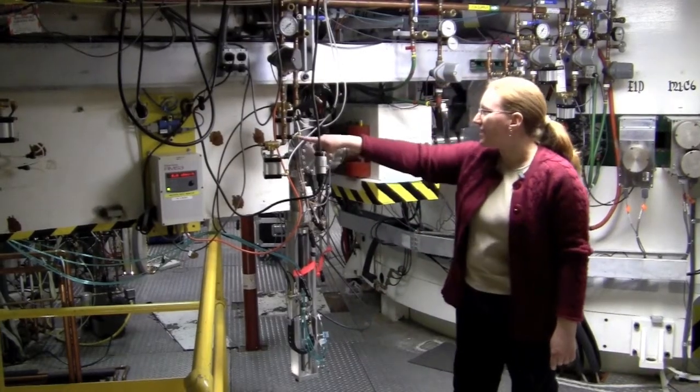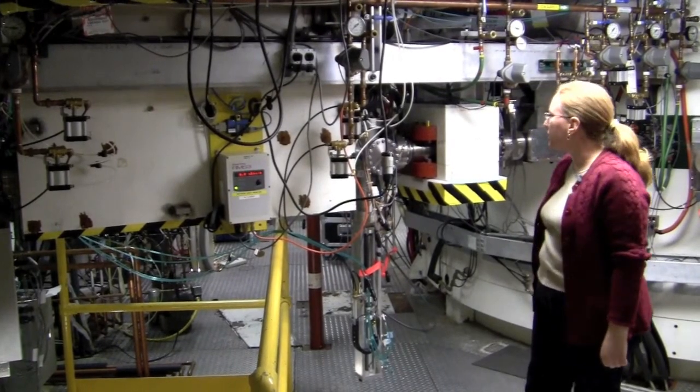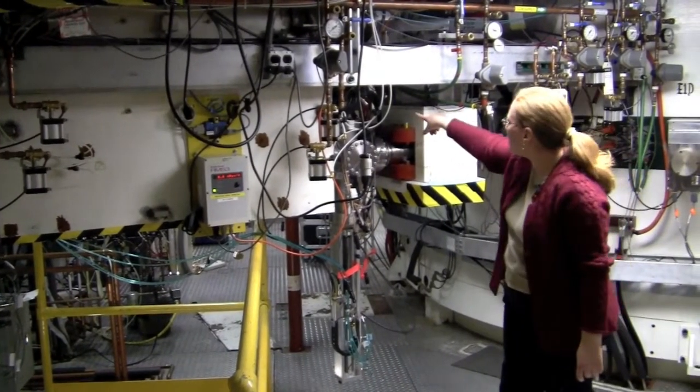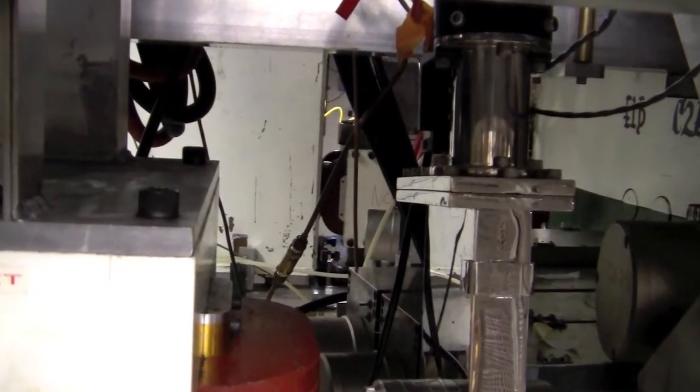Right here is the injection line for the 1200, coming from the 500, and past it you can just see, going the other direction, the extraction line heading toward the A1900.